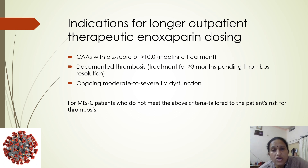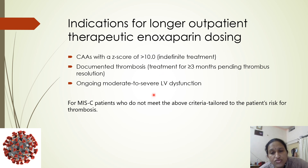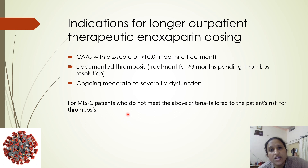Some patients require longer outpatient therapeutic enoxaparin dosing — specifically those with coronary artery aneurysm and Z-score more than 10, who require indefinite treatment, and those with documented thrombosis, who require treatment for 3 or more months depending on when the thrombus resolves. Ongoing moderate to severe left ventricular dysfunction is also an indication for longer outpatient therapeutic enoxaparin dosing. For MIS patients who do not meet these criteria, anticoagulation is tailored according to individual thrombosis risk.